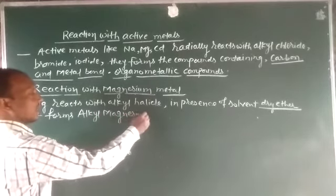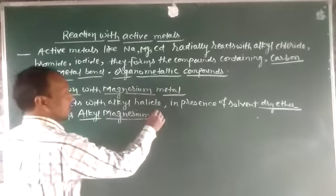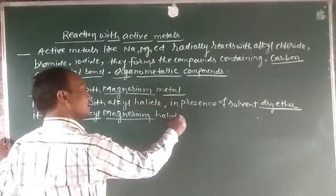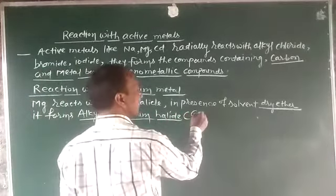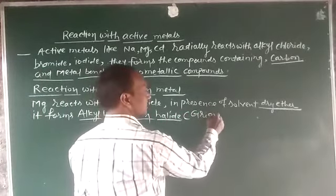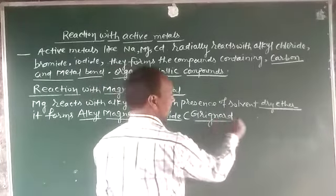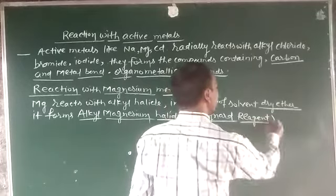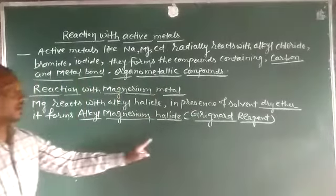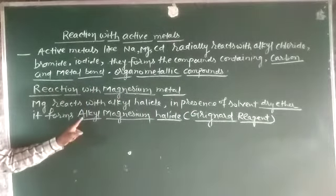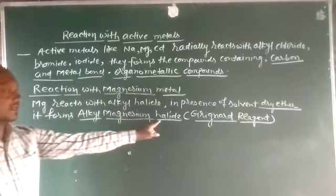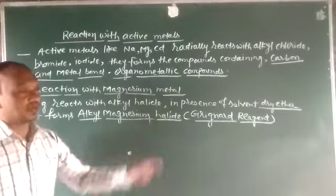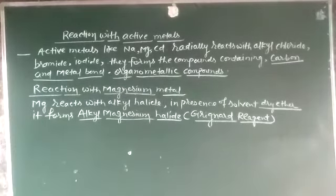This alkyl magnesium halide is called Grignard reagent. It is denoted as RMgX — alkyl magnesium halide.